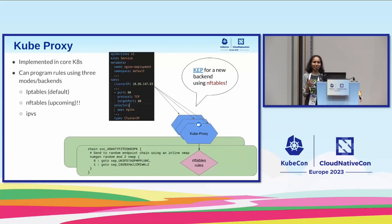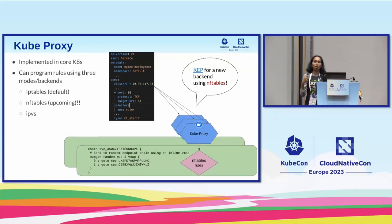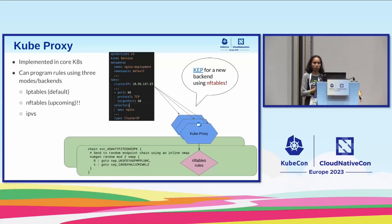Moving forward, there's a new KEP — linked on the slide — which is going to support a new backend based on nftables. iptables has been around for a long time as the default packet processing filtering system in Linux kernel, but it's getting deprecated. It has disadvantages: absence of incremental updates, it doesn't scale well as cluster sizes increase, and it takes a lot of time for rules to sync with large numbers of services. We want to prepare for the move to its successor, nftables, which is more performant and efficient, and where all new features are going.